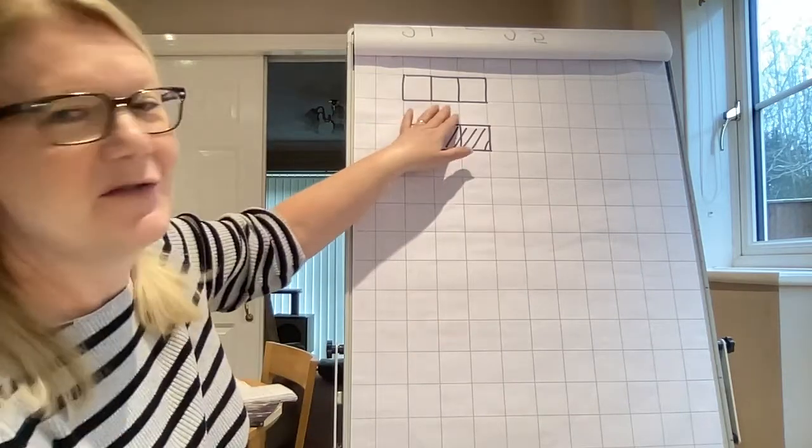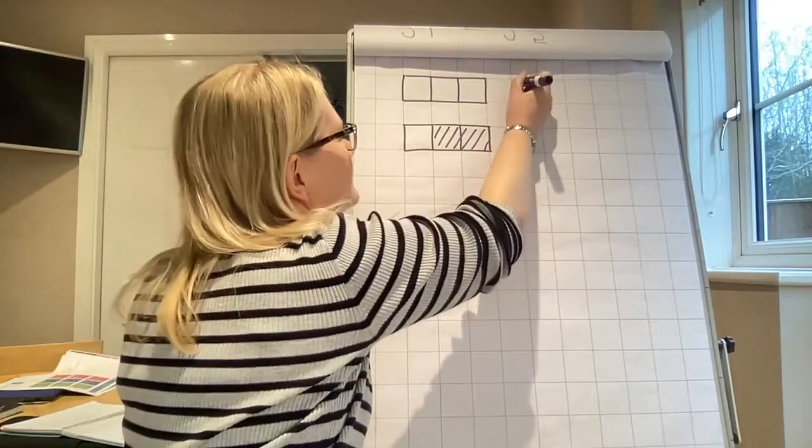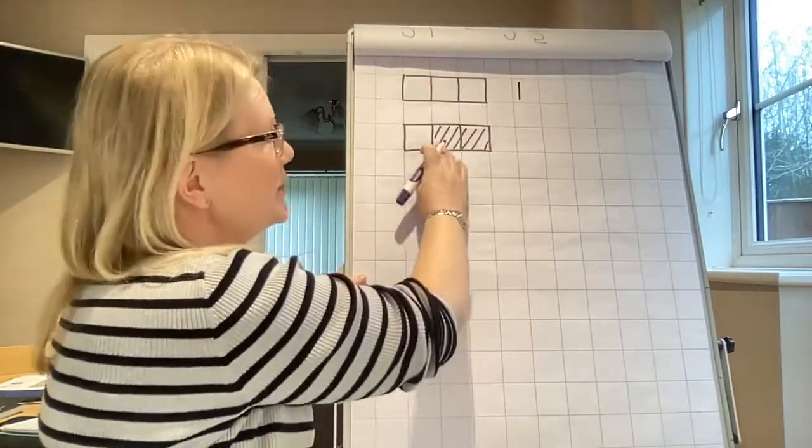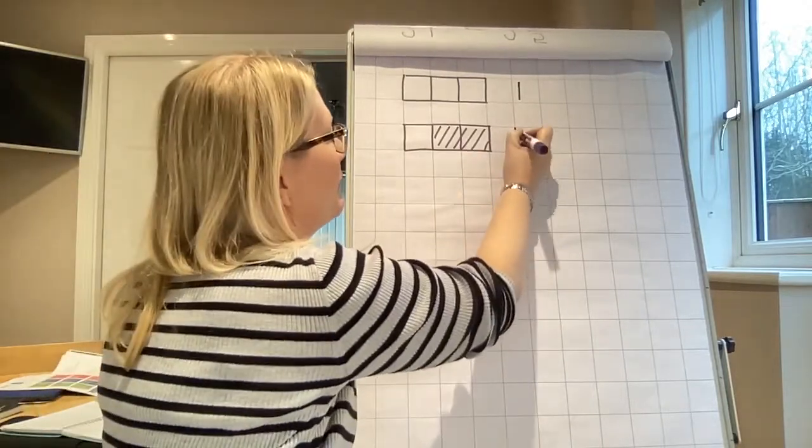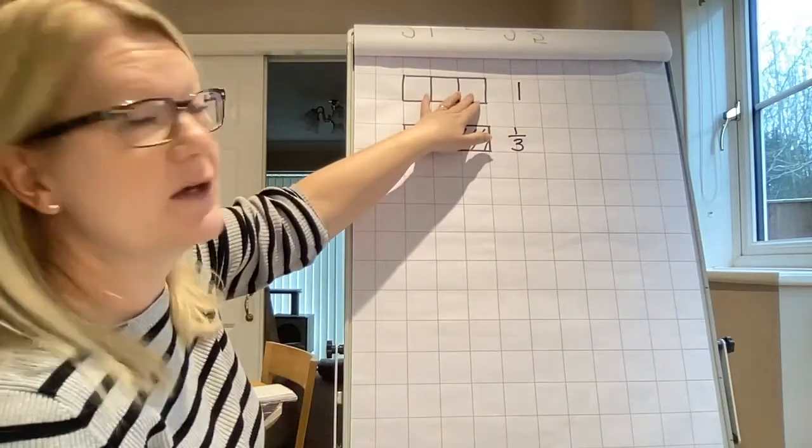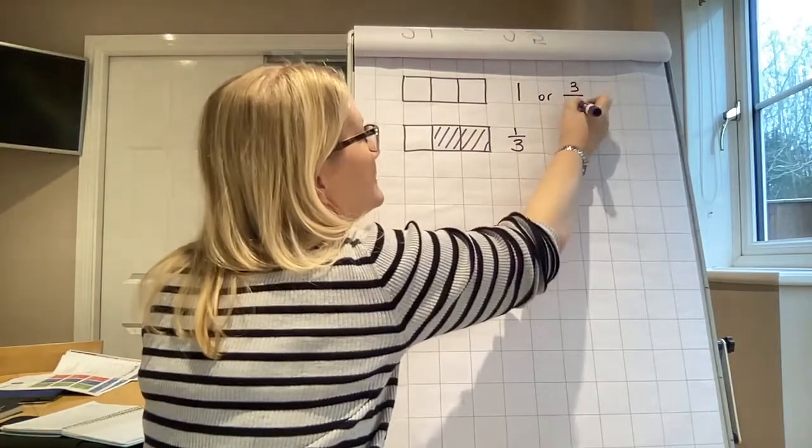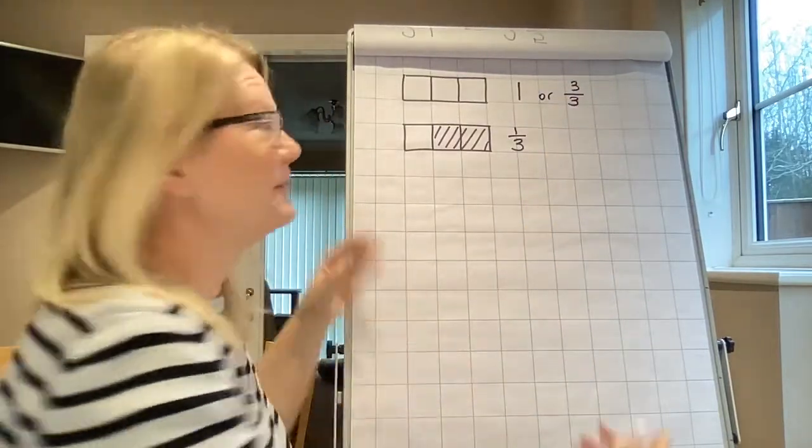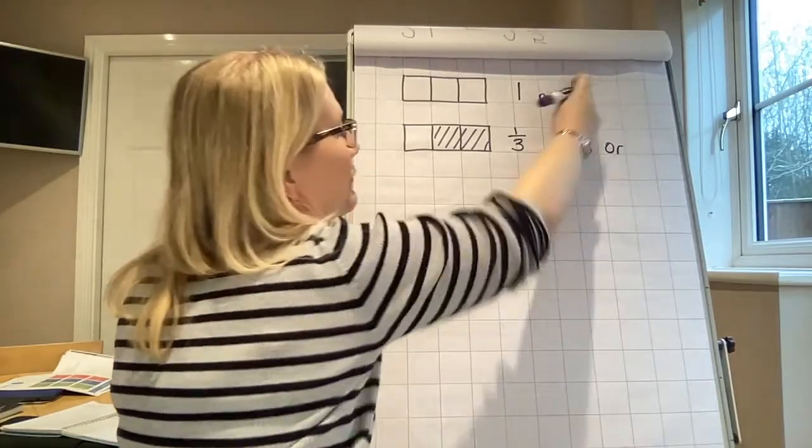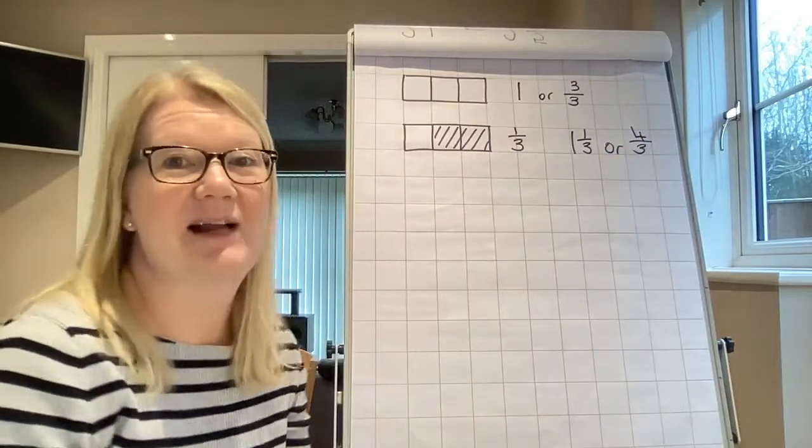Okay, so I'm sure you've all got it right. We've got one whole there and it's divided into three, so we're definitely looking at thirds and we've got one third there. We could also say, couldn't we, that we've got three thirds. So all together we've got one and a third or four thirds.